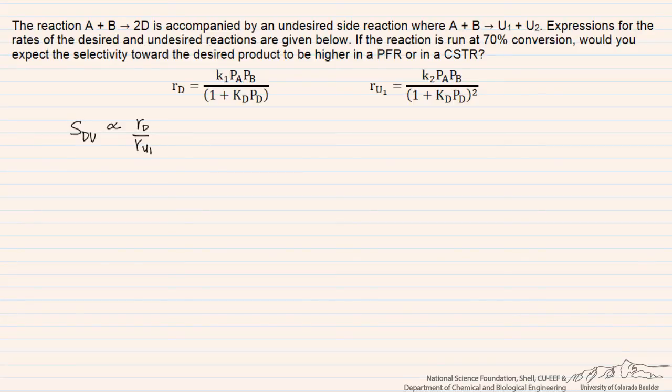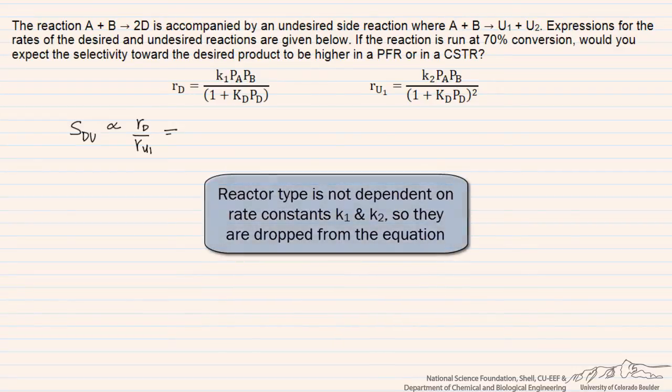We may want to multiply the top by a factor of 2 in order to be completely quantitative about it, but that actually is not too important a factor in this problem. If we take that ratio of the desired to the undesired product from this Langmuir-Henschelwood type rate expression, then what we see is that most of the terms cancel.